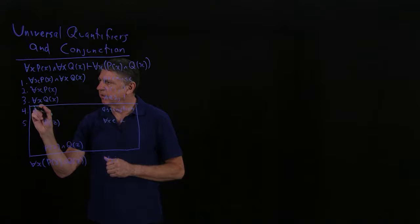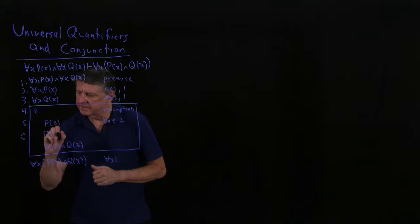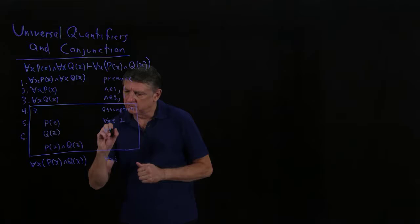And I could then say, I could then say, I've used that one. How could I use it here? I could apply the same rule to this. So that would be line 6. And that would be asserting that that variable has property Q. And that would also be universal elimination. But now it's based on line 3.